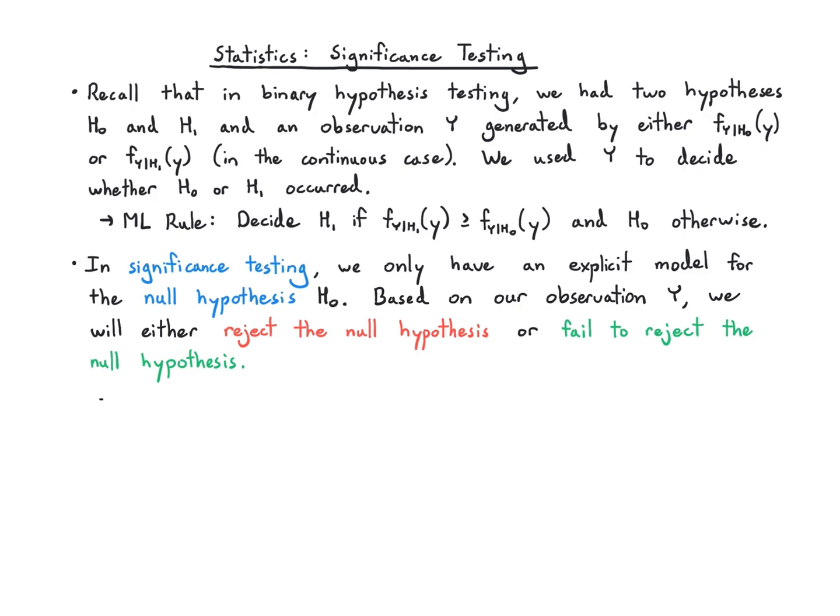At this moment, you might be thinking, why not just call this fail to reject accept the null hypothesis? This language is there to remind us that we don't have that much information about the world we're testing. We only know that under the null hypothesis we have a model. If we get a measurement that looks pretty different from that, we're going to say the null hypothesis doesn't make sense.